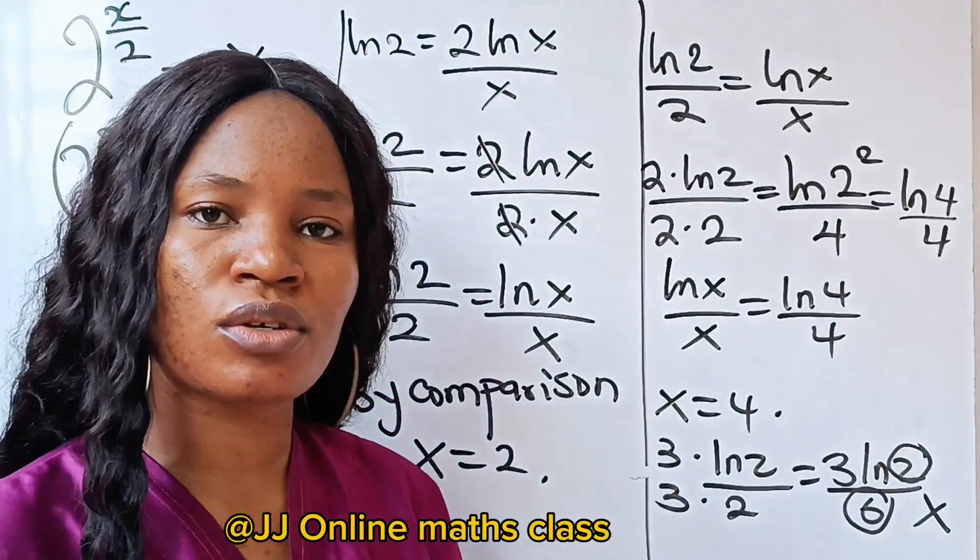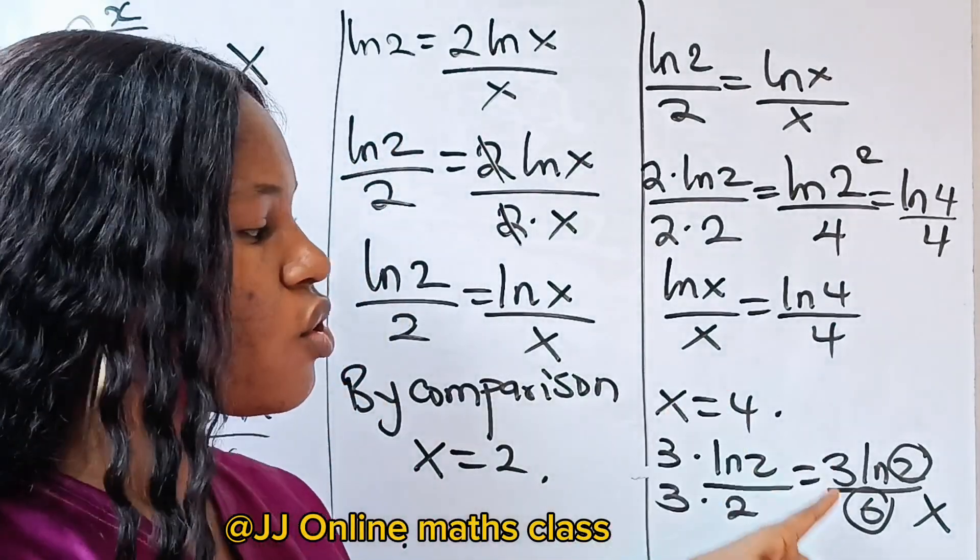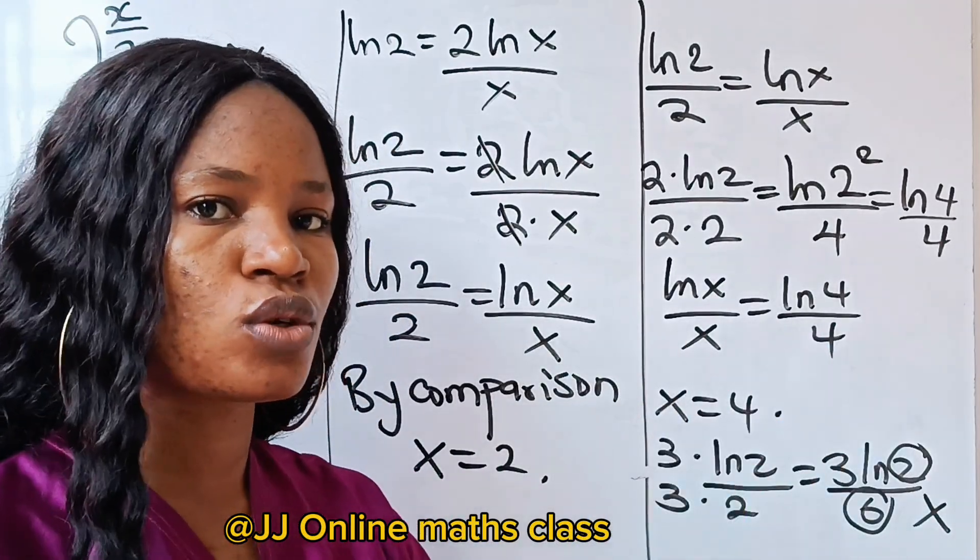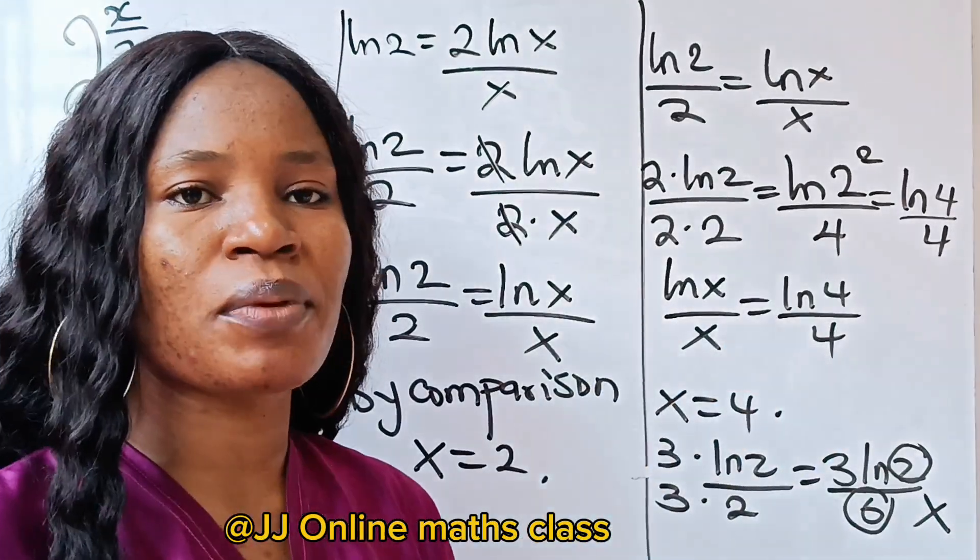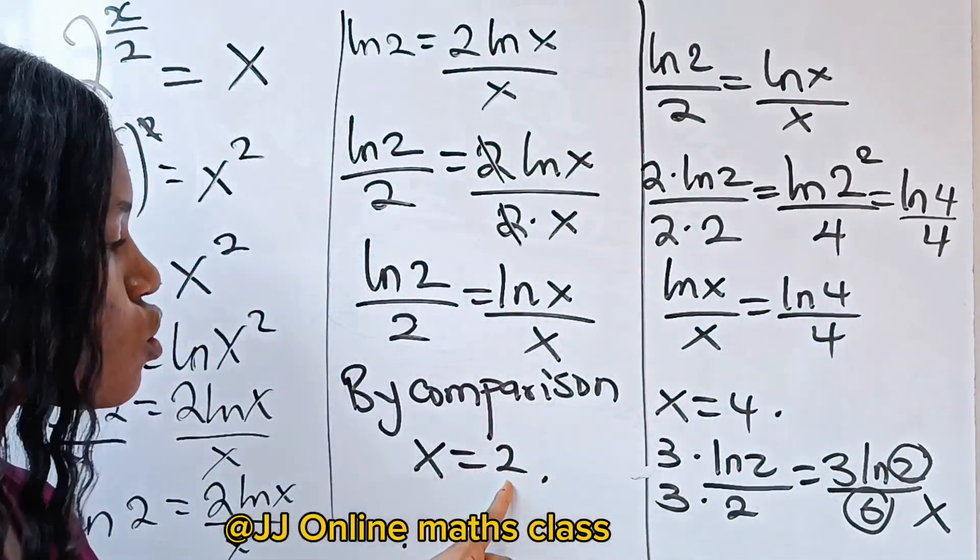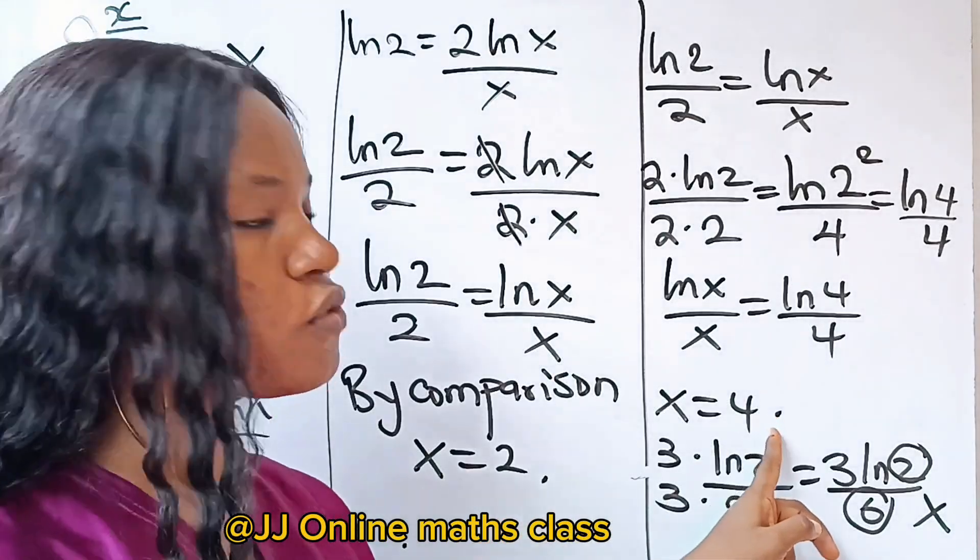So if you continue this test running, you'll notice that you are still going to get different solutions that will not rhyme with what we have on the board. Therefore, we can simply say that our x is equal to 2 and our x is equal to 4.